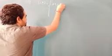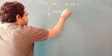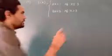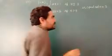Question number 17 of exercise 5.1: Find the relationship between a and b. The function f is defined as f(x) = ax + 1 if x ≤ 3, and f(x) = bx + 3 if x > 3. It is given that this function is continuous at x = 3.